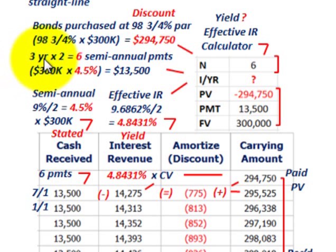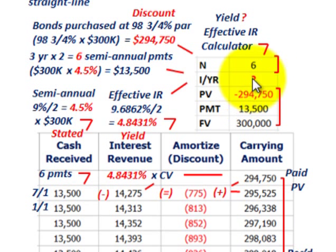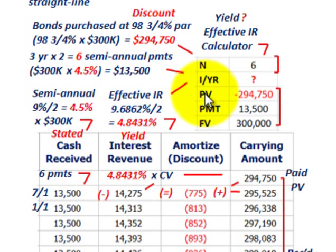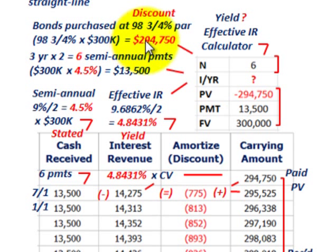For the number of periods: these are three-year bonds, semi-annually two payments per year, so we have six payments — based on semi-annual interest. Put that into your N function. For the present value: that's what we purchased these bonds at — 98.75% times the $300,000 maturity value — so the present value is $294,750. Put that in as a negative number because that's what you're paying for them.